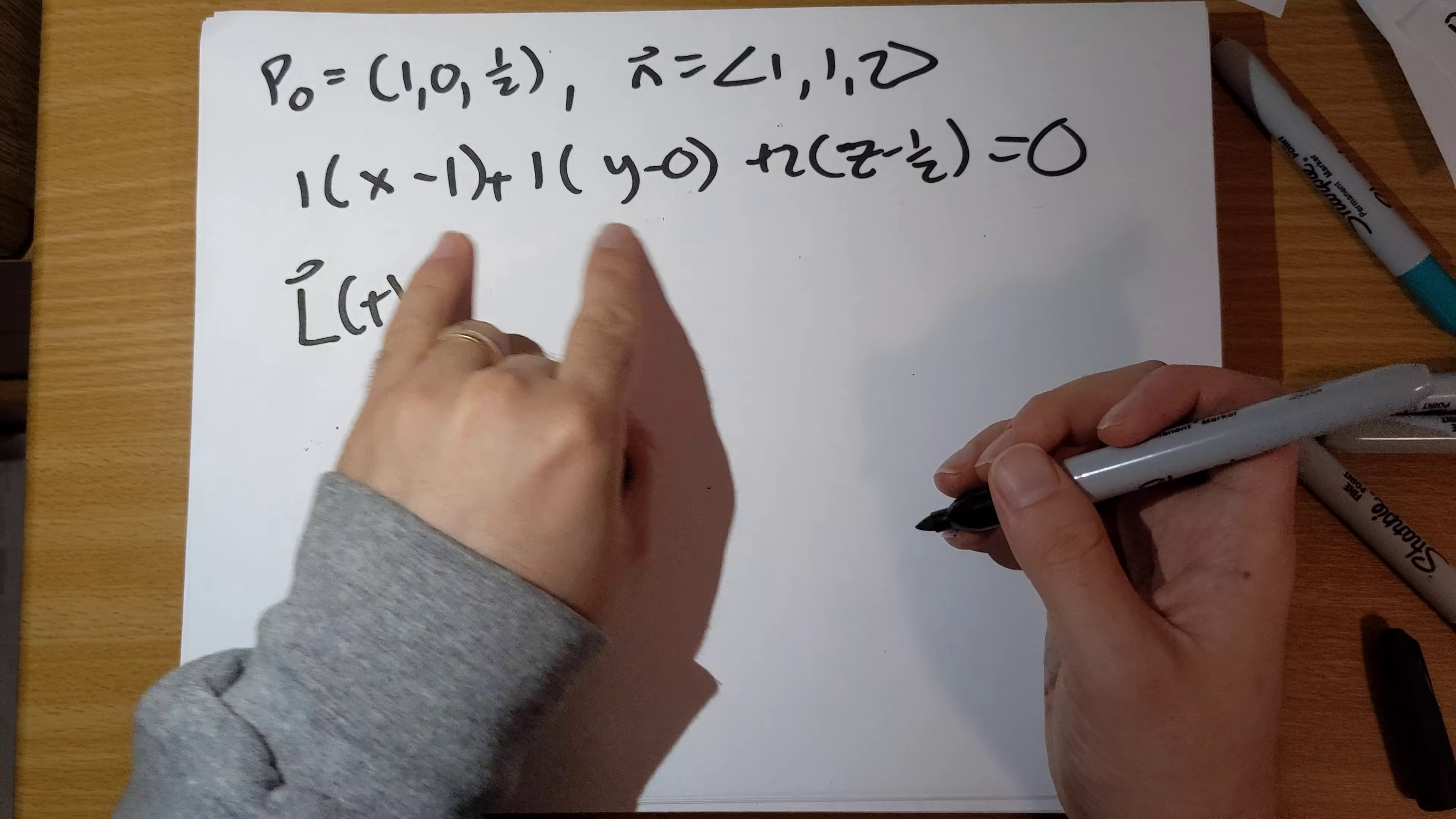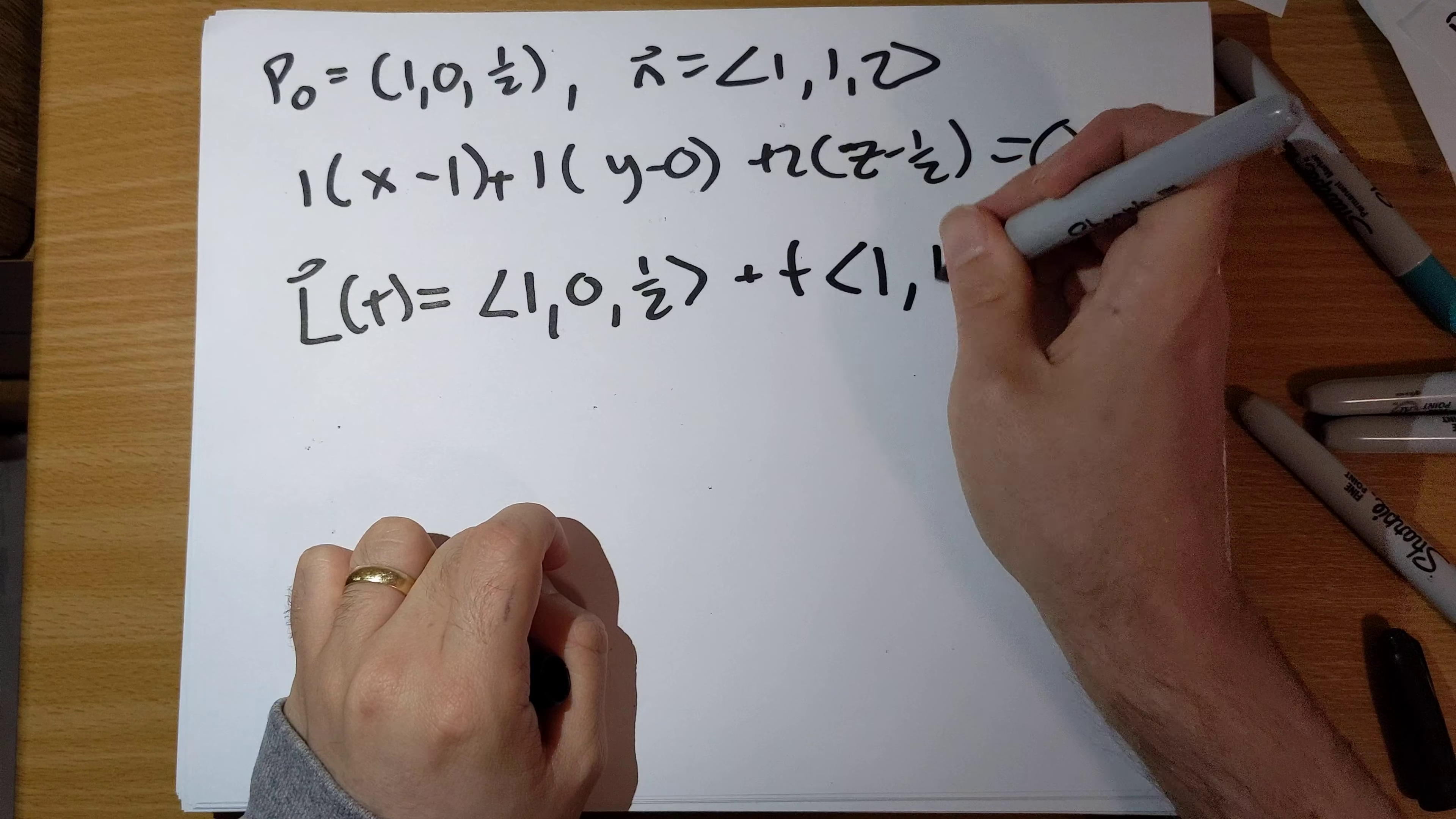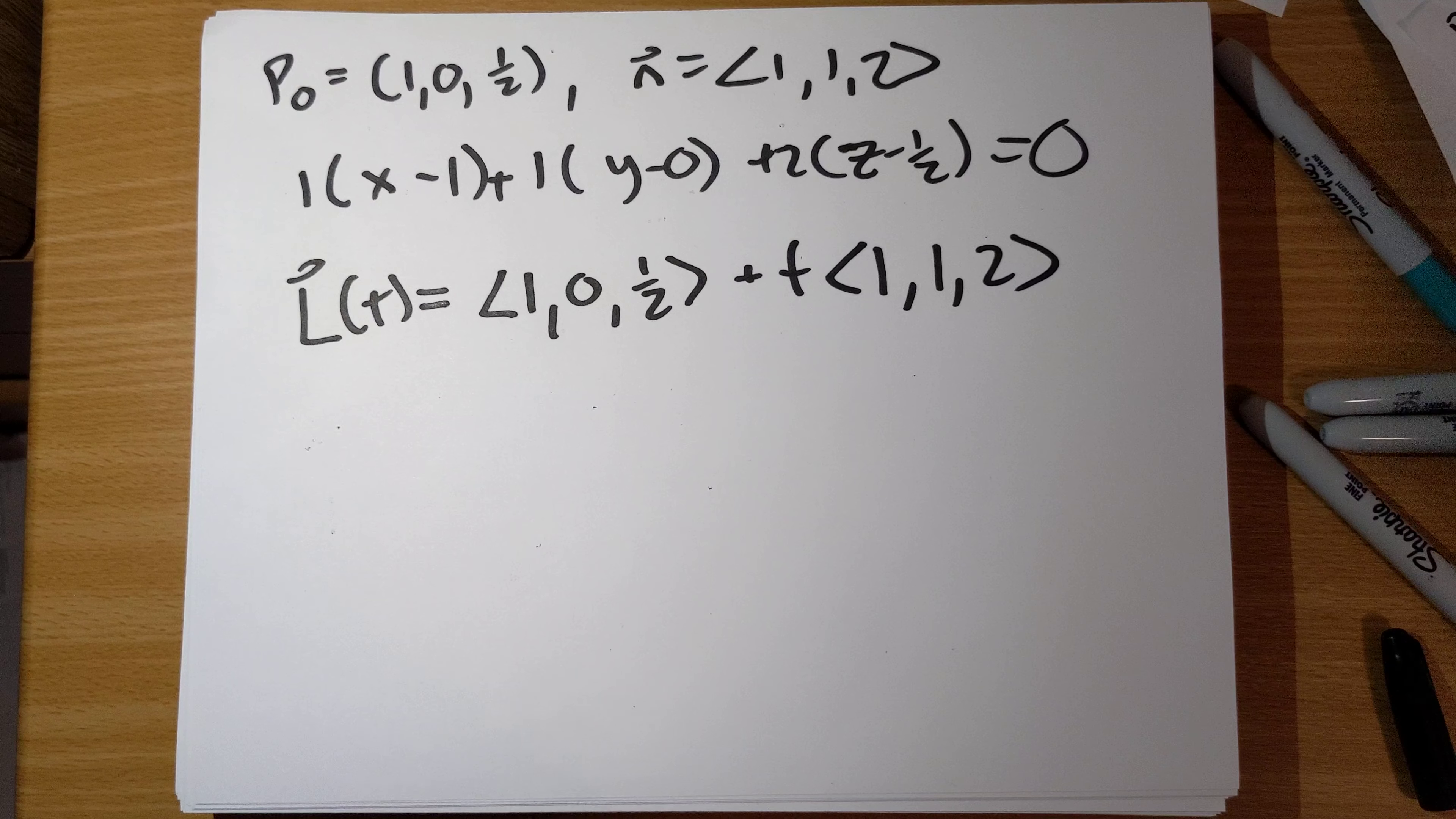We have this point and this direction vector, so L of t is going to be 1, 0, 1 half plus t times the direction vector, the normal vector. So that is problem number 41.